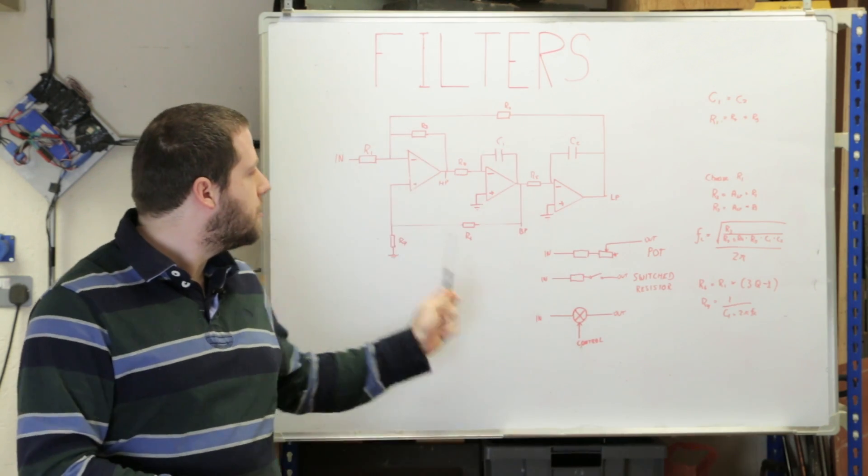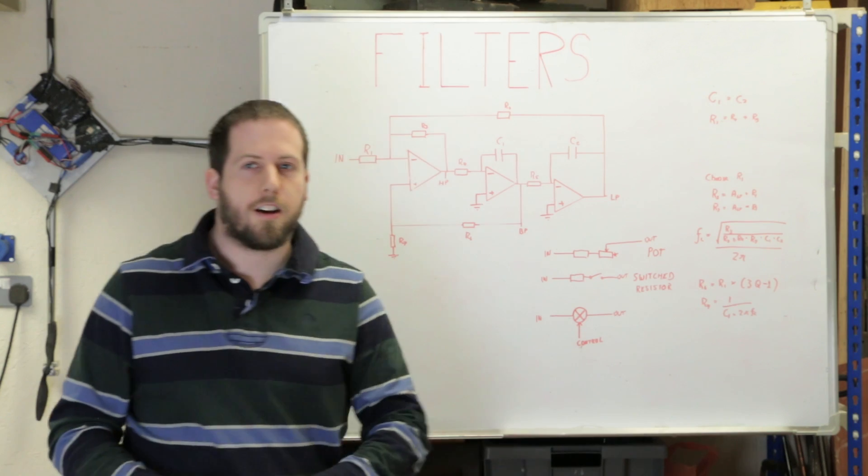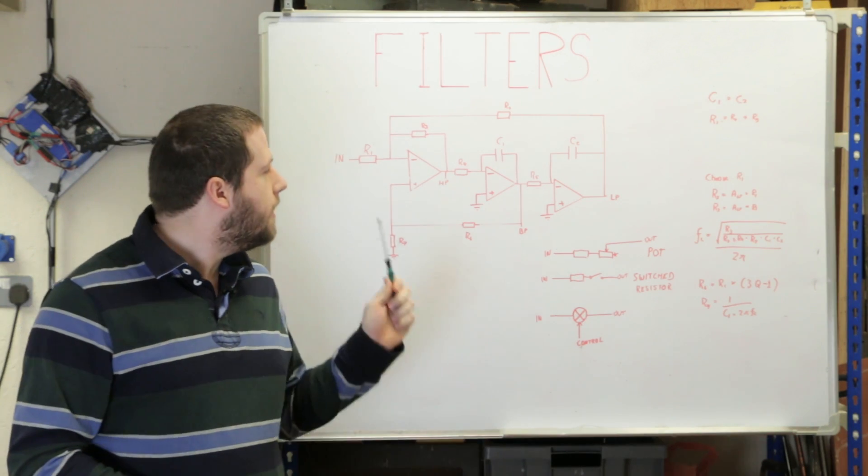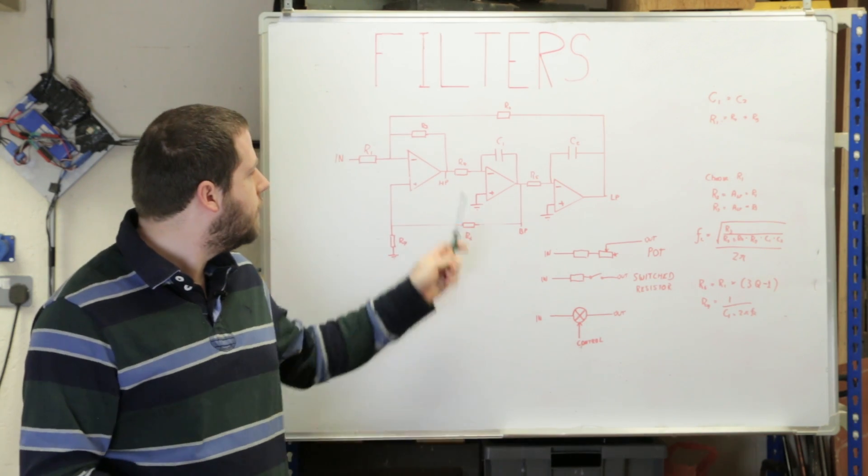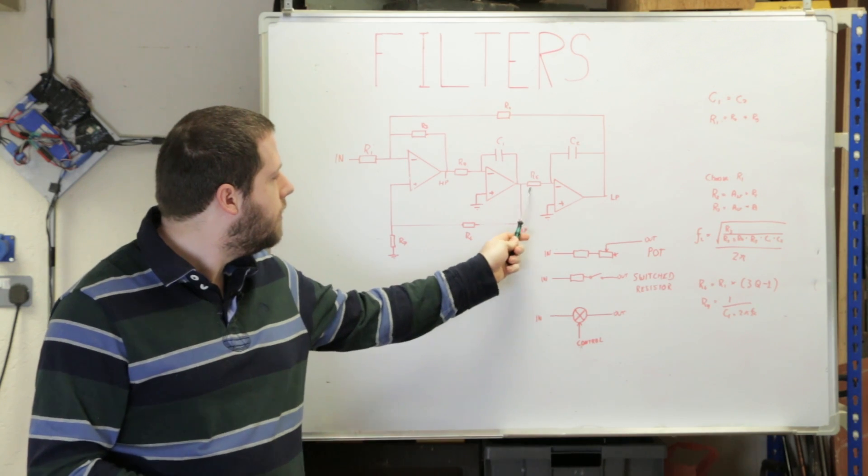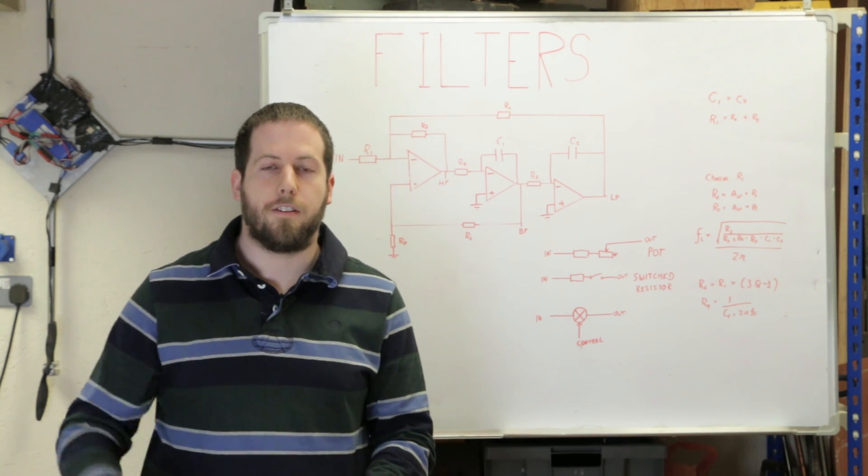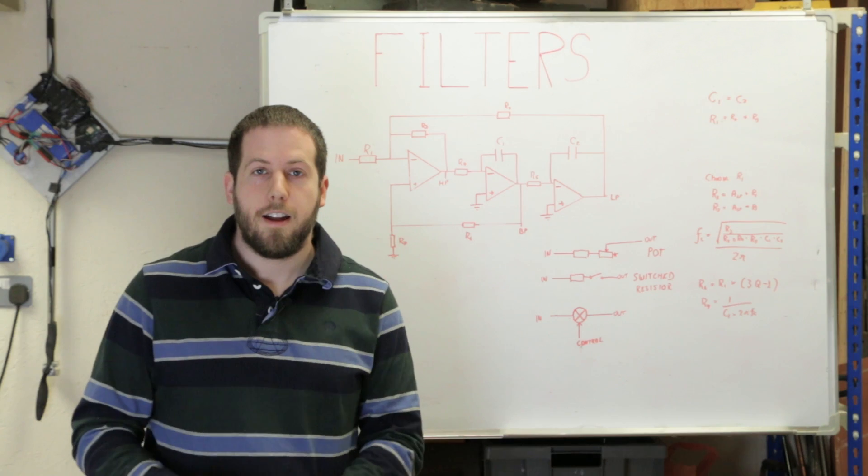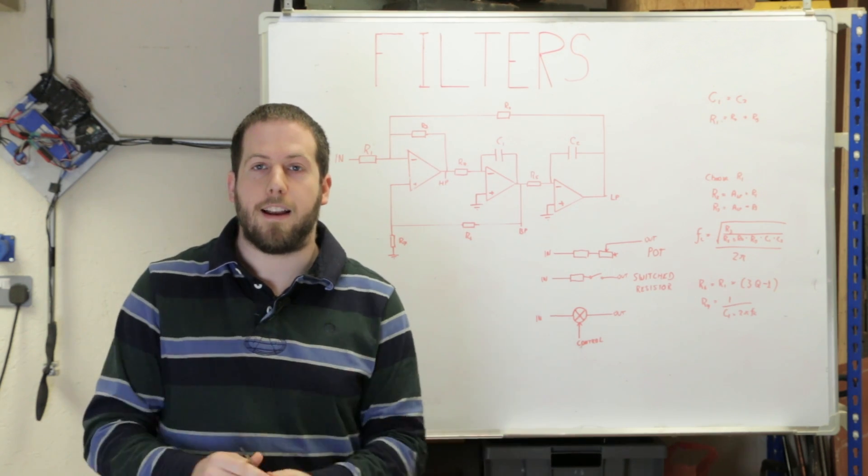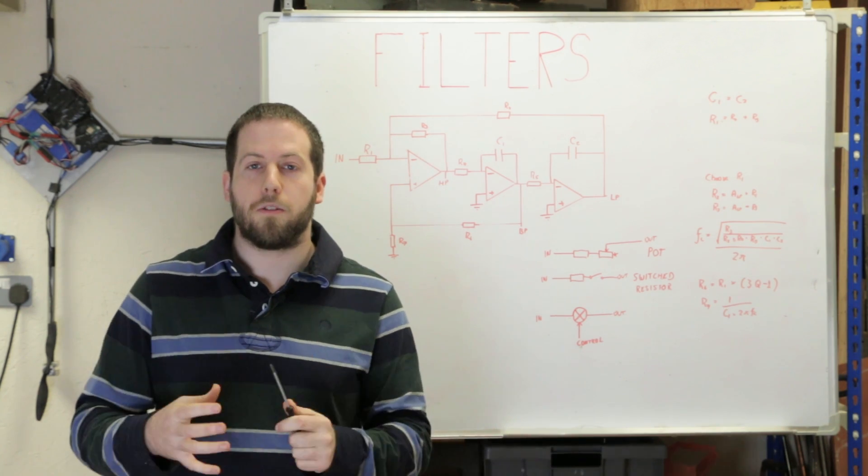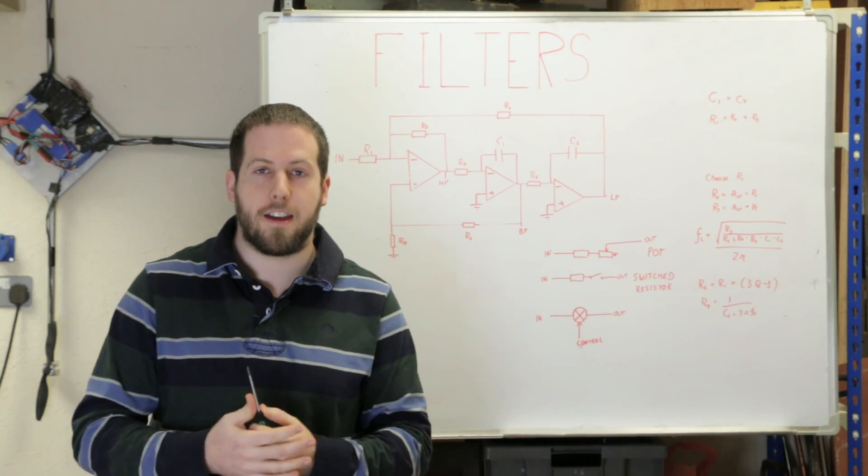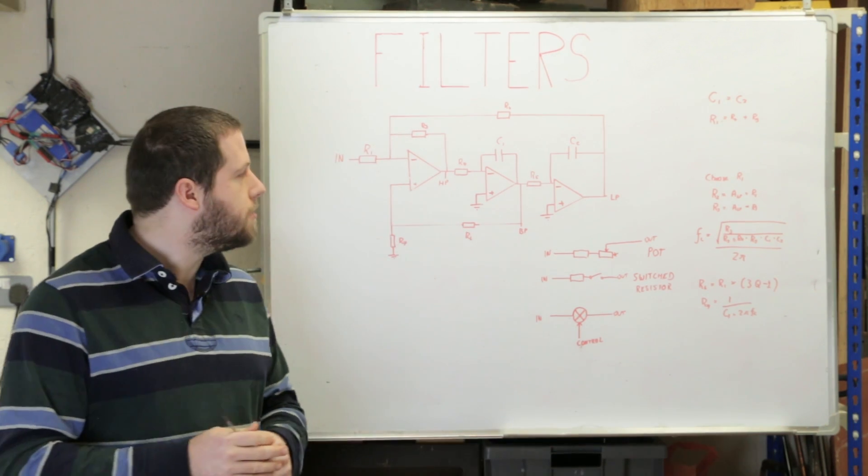We've got to change some components to be able to change the cutoff frequency. The simplest way of doing that is change R4 and R5. So you've only got to change two resistors and the resistors always stay at the same value, so you just make sure they change and stay the same.